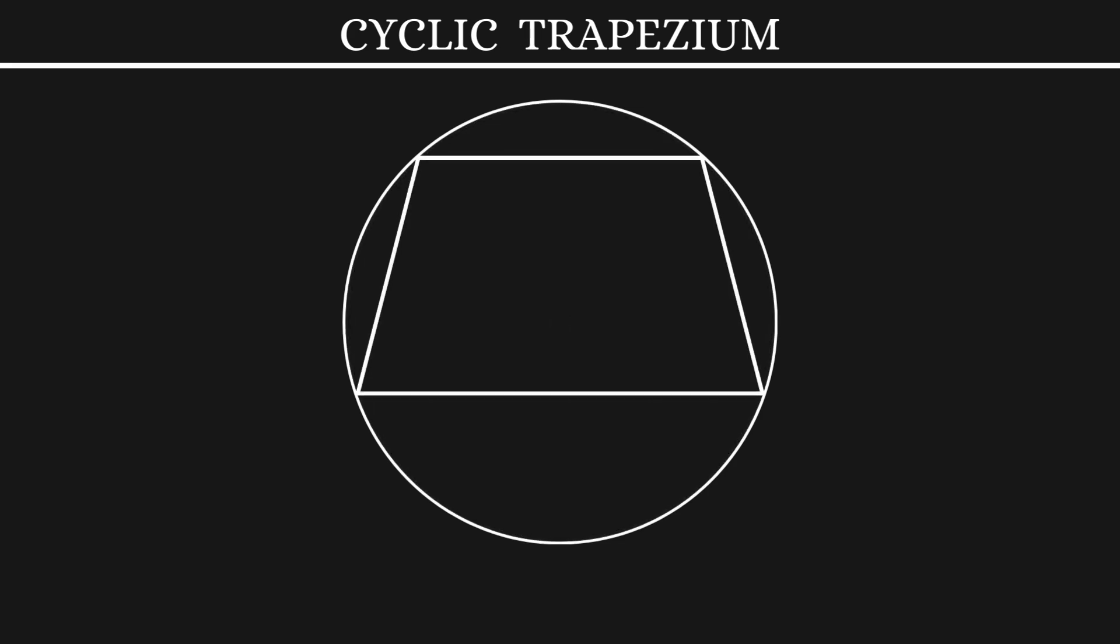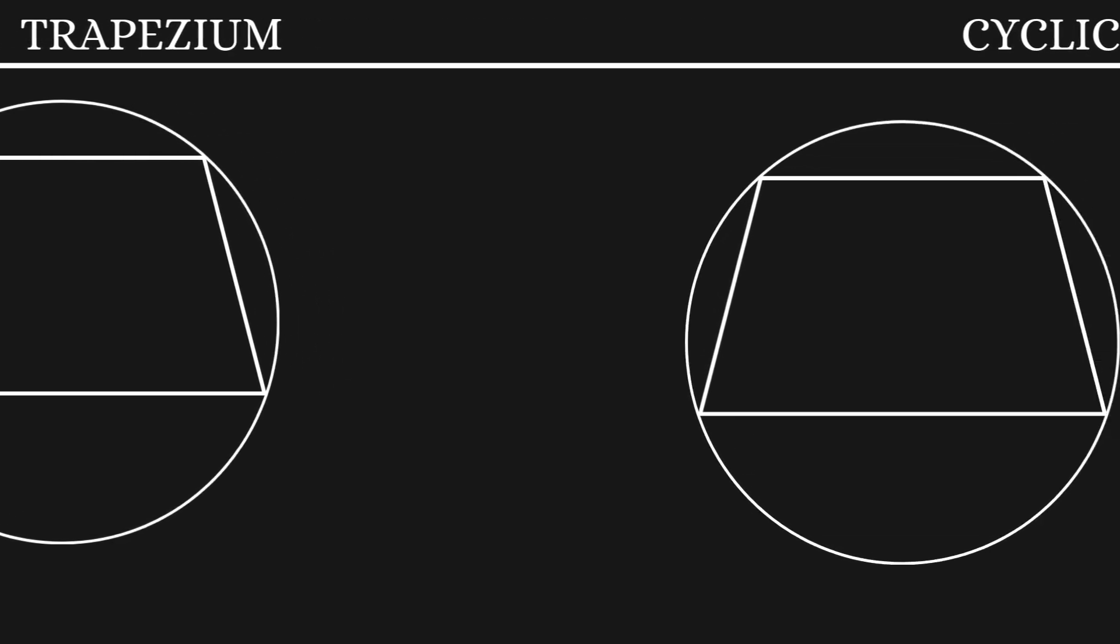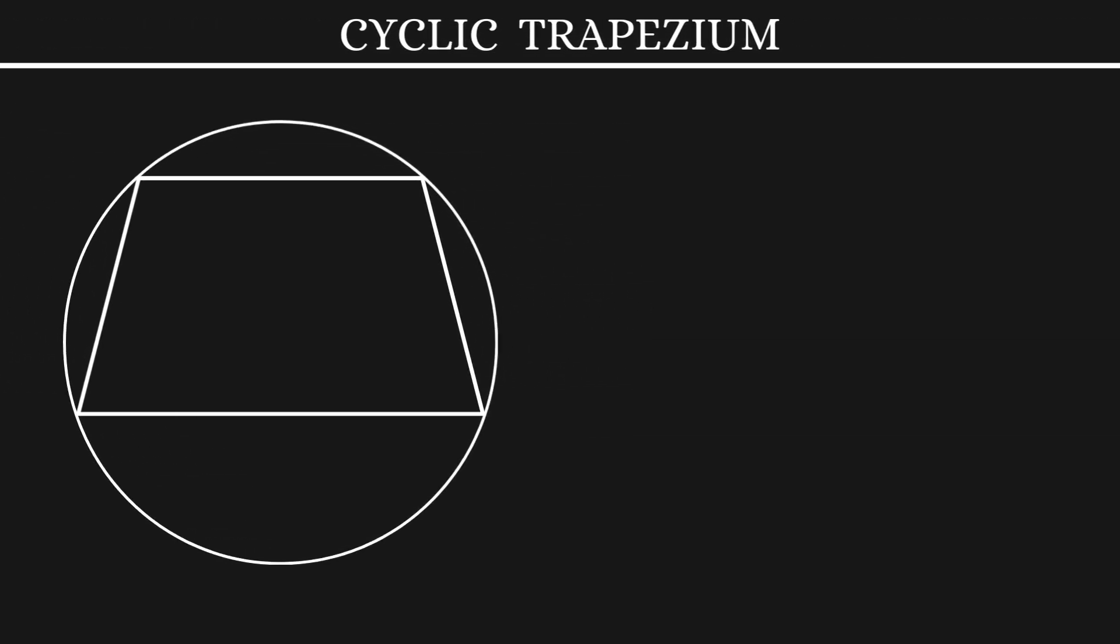With this understanding, let's learn some properties of a cyclic trapezium. First, the opposite angles are supplementary, which means we have two pairs of angles which add up to 180 degrees.